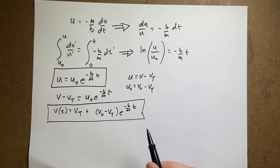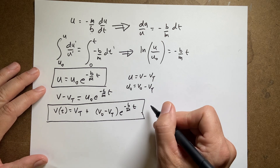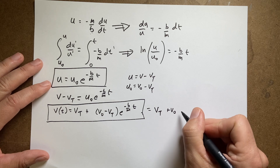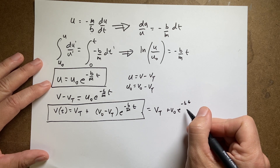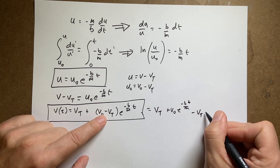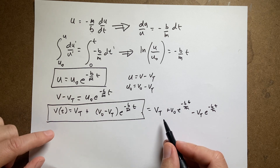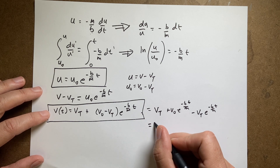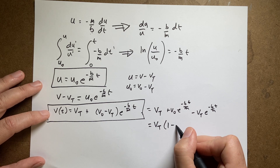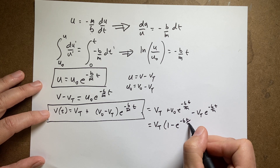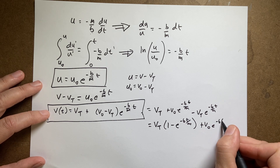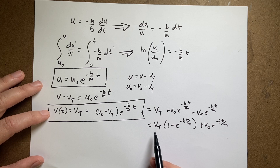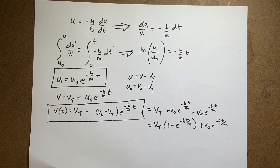I can multiply this out to combine the VT terms. Expanding: VT plus V_zero·e^(−Bt/m) minus VT·e^(−Bt/m). Combining the VT terms gives: V(t) equals VT times (1 minus e^(−Bt/m)) plus V_zero times e^(−Bt/m). As t gets bigger and bigger, the solution approaches the terminal velocity — and that second term goes away. That's good.